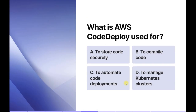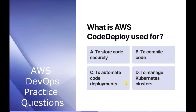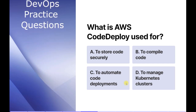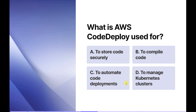In this question they are asking: what is AWS CodeDeploy used for? The options are: to store code securely, to compile code, to automate code deployments, and to manage Kubernetes services. AWS CodeDeploy is a service provided by AWS used to automate the deployment of applications to various computing resources — these can be EC2 instances, on-premises servers, or even Lambda functions. It helps developers release new features and updates more frequently and reliably.